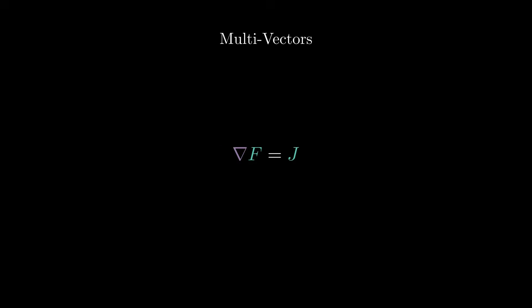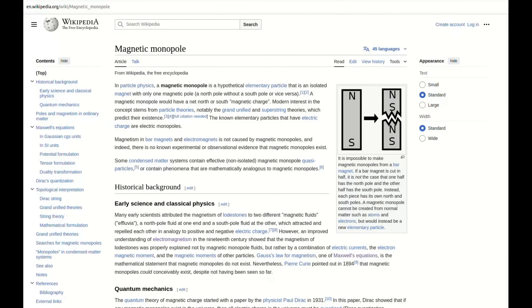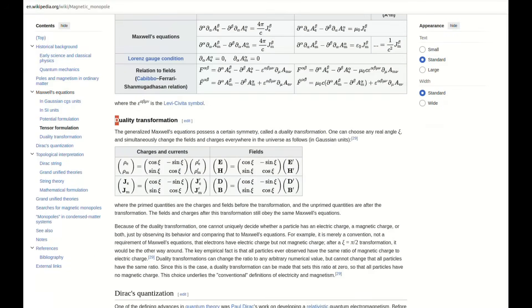Leaving us with this spectacularly compact representation of the electromagnetic and gravitomagnetic field. And then, we're going to take the source of this field, which is that particular multivector we considered before, and we're going to see how it actually relates to the mathematics of magnetic monopoles through something we call duality transformation.